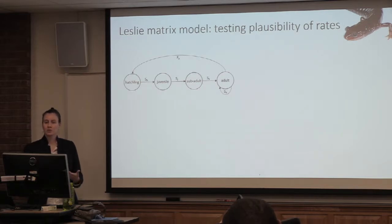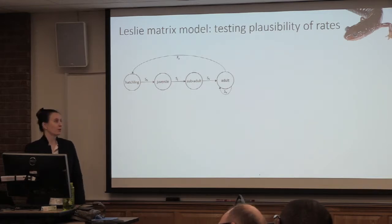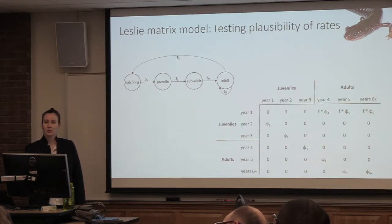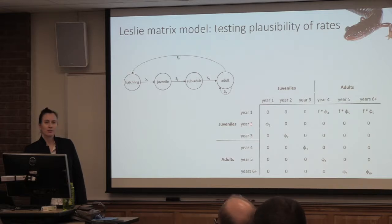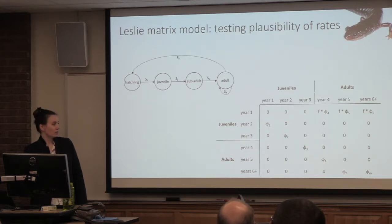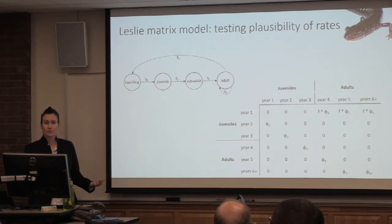So then we moved on to testing the plausibility of these rates. We created a Leslie matrix model based on this life history diagram. The way it works is: if you're a year-one animal transitioning to year two, you have this survival value applied; year-two transitioning to year three experiences this survival; and so on. If you're an adult, you experience this survival. There are also three age classes that are reproducing, with a fecundity term times their survival values to indicate the number of hatchlings produced.